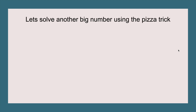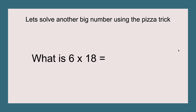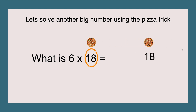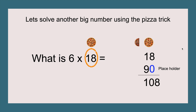Let's solve another big number using the pizza trick. What is six times eighteen? We're going to circle it and put it right here. We're going to add our placeholder of zero, and the half of eighteen is nine, so that makes ninety. Eighteen plus ninety equals one hundred and eight. The answer is one hundred and eight, and six times eighteen equals one hundred and eight.